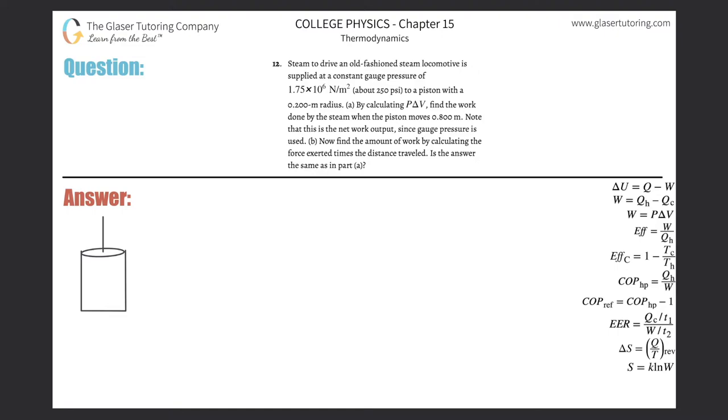Number 12: Steam to drive an old-fashioned steam locomotive is supplied by a constant gauge pressure of 1.75 times 10 to the 6 newtons per meter squared to a piston with a 0.2 meter radius. Letter A: By calculating P delta V, find the work done by the steam when the piston moves 0.8 meters. Note this is the network output.